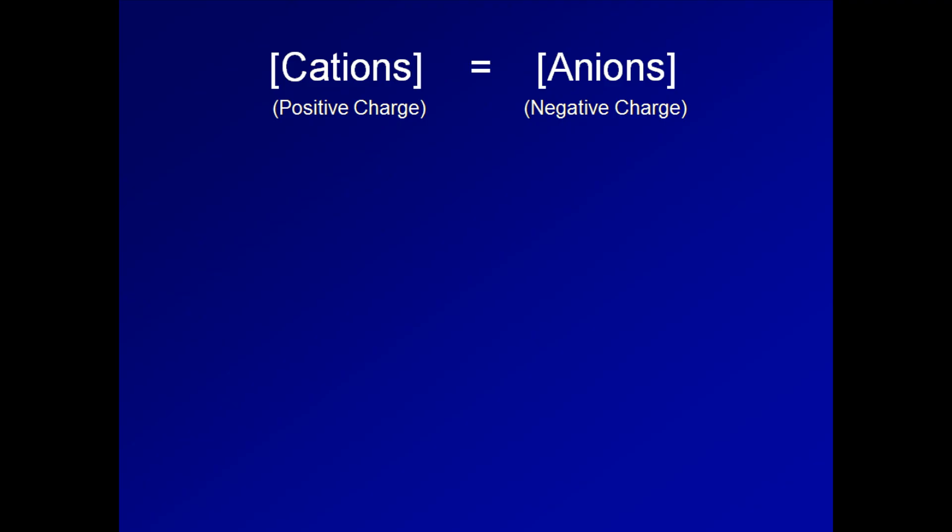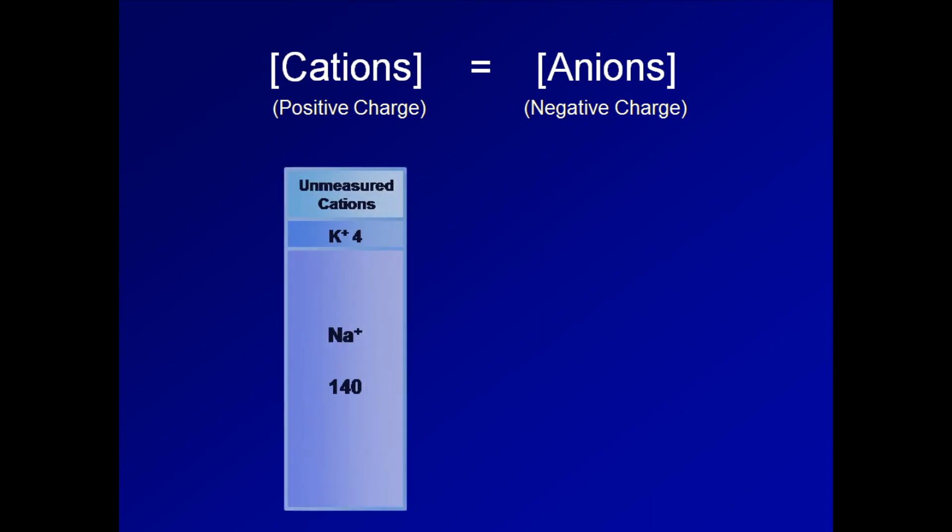In the body, the concentration of cations needs to equal the concentration of anions in order for us to be electrically neutral. More exactly, the concentration of positive charge needs to equal the concentration of negative charge. In the serum, the vast majority of positive charge is carried by the sodium ions. A concentration of 140 milliequivalents per liter is typical. Potassium ions have a small but easily measured concentration, usually about four. Then there are a number of cations which are less frequently or less easily measured. These include calcium, magnesium, and various positively charged proteins.